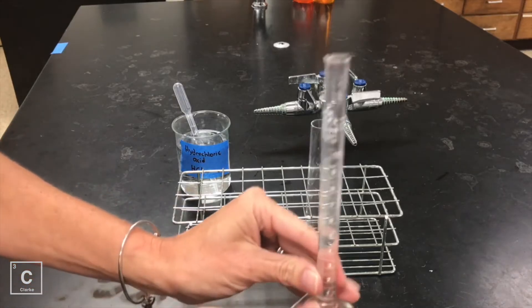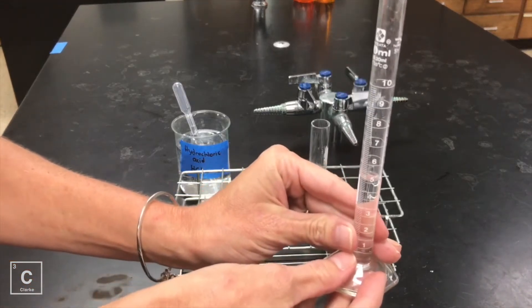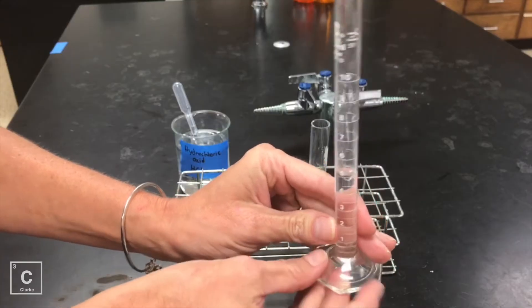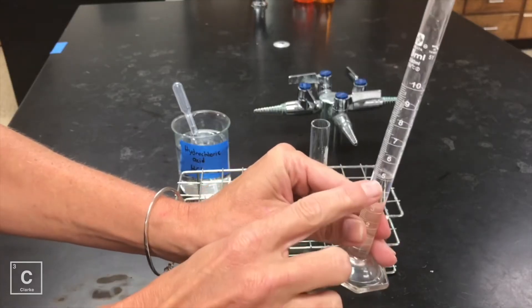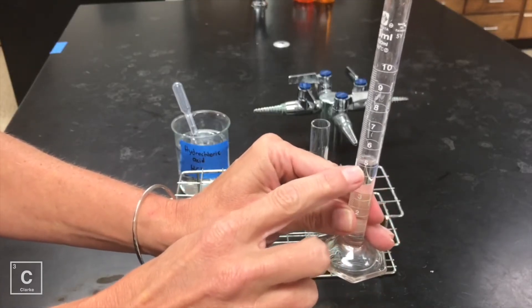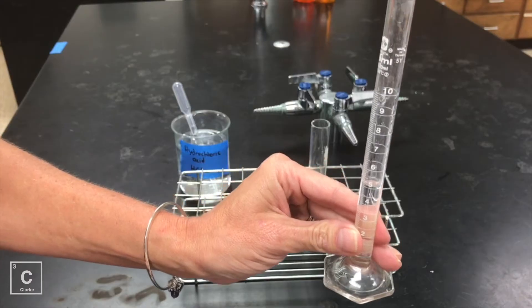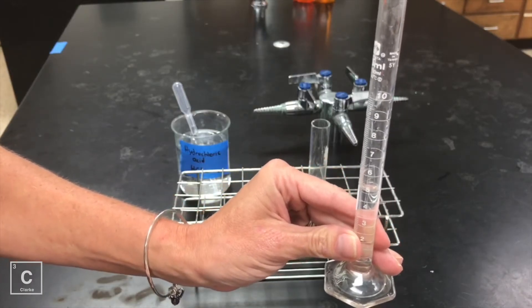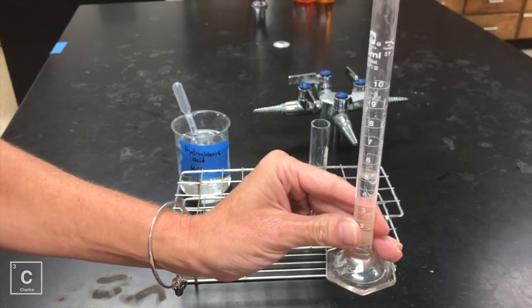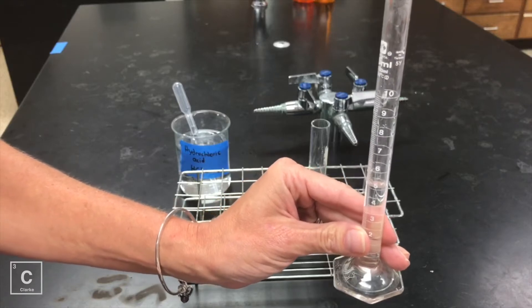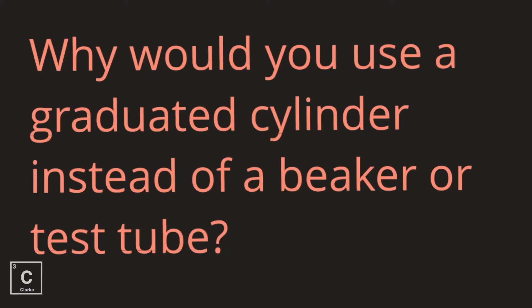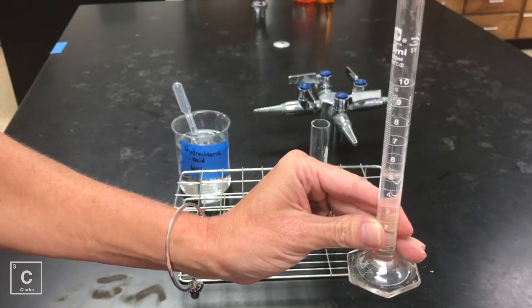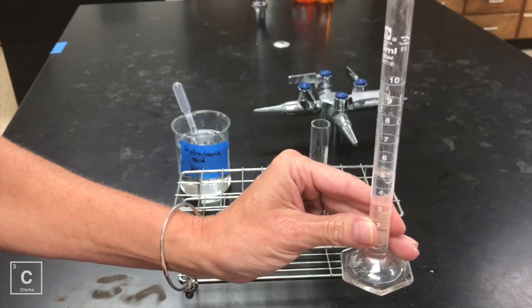I've used a graduated cylinder to measure my hydrochloric acid. I've got five milliliters. I had to go all the way down and put my eyes at the level of the meniscus to make sure that the bottom of the meniscus is on the five. When the acid was dispensed, why would you use a graduated cylinder instead of a beaker or a test tube? I'm going to pour it into my test tube.